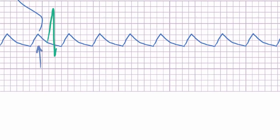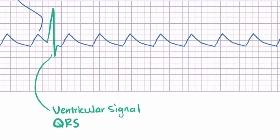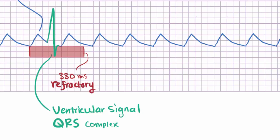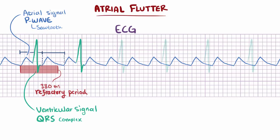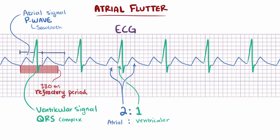Starting with this one, it goes to the ventricles and contracts them, causing this QRS complex. If the cells in the AV node need to wait about 330 milliseconds, the next atrial contraction, which happens in about 170 milliseconds, won't be able to conduct to the ventricles. The next atrial event after that lands at about 340 milliseconds from the first one, which means the AV node is out of refractory and ready to go, so it conducts this one. In this example, we've got a 2 to 1 atrial to ventricular rate, because for every 2 atrial contractions, only 1 leads to a ventricular contraction.